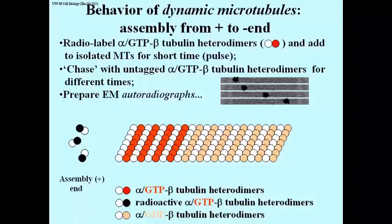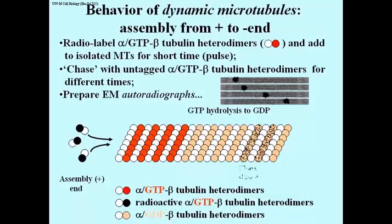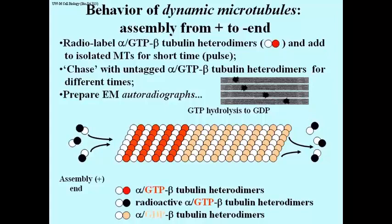This is interpreted to mean, as shown in the cartoon, that the alpha-beta heterodimers are adding to one end and coming off the other. The plus end is the assembly end where the radioactive heterodimers with the black balls are adding. If you wait long enough after the chase, you will find that the microtubules are no longer radioactive at all. They don't become radioactive again because what's coming off at the minus end — the disassembly end — may be radioactive, but those are GDP-bound heterodimers, and GDP-bound heterodimers cannot participate in adding to the plus end.